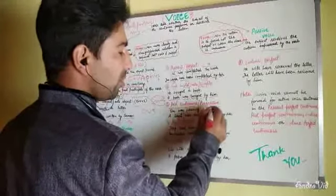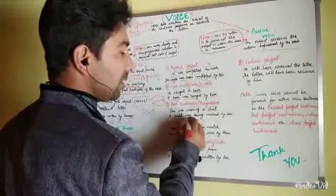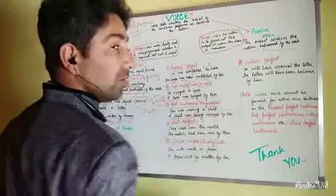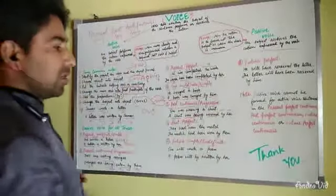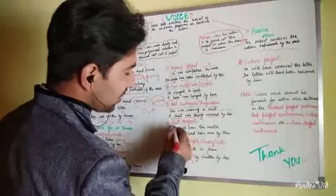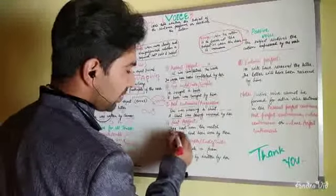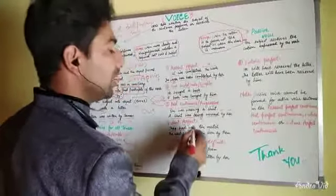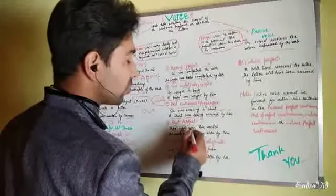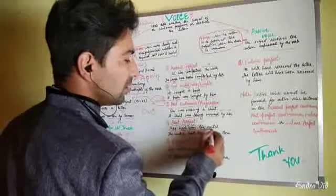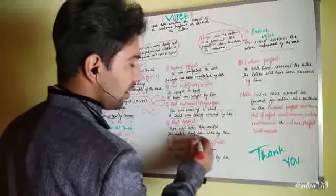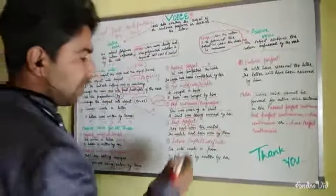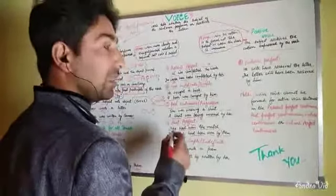Past continuous or progressive: subject + helping verb + gerund form of verb + object becomes object + helping verb + third form of verb + preposition + subject. For past perfect: subject + helping verb + third form of verb becomes object + helping verb + third form of verb + preposition + subject — for example, 'had been written by.' The helping verb and V3 form are preserved accordingly.